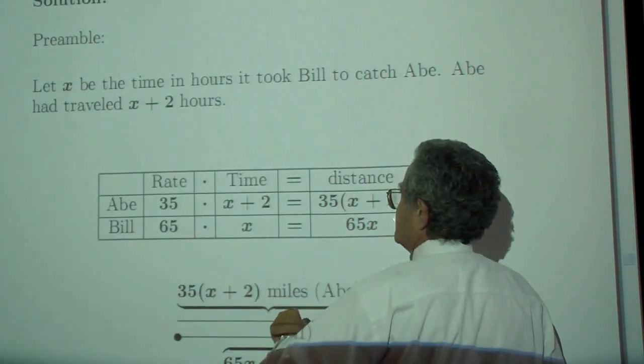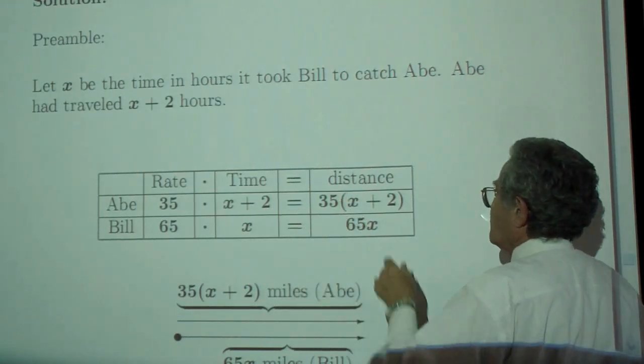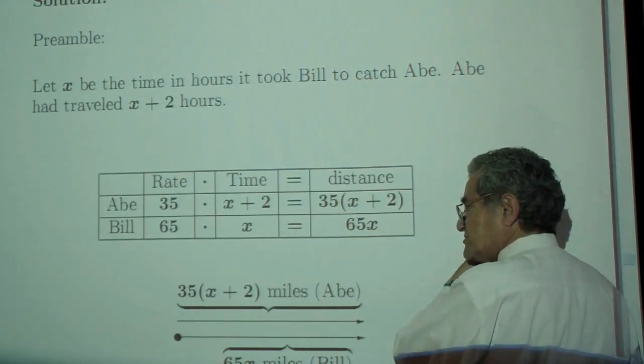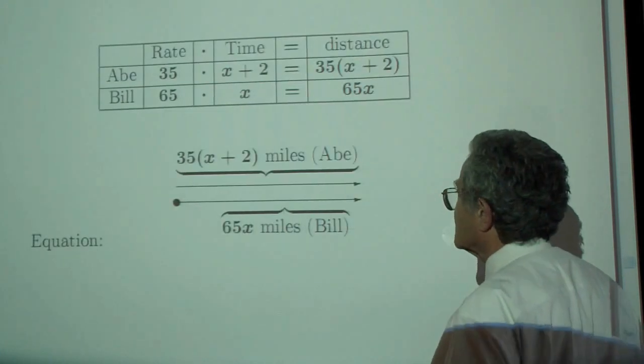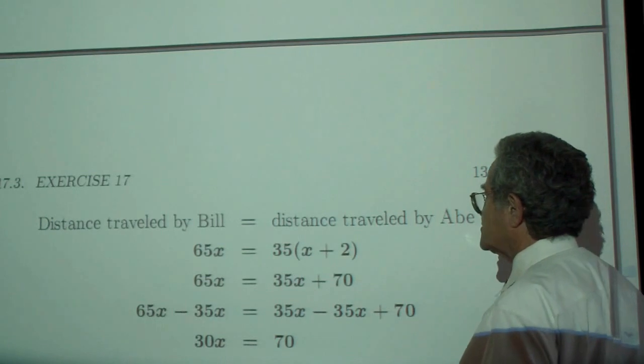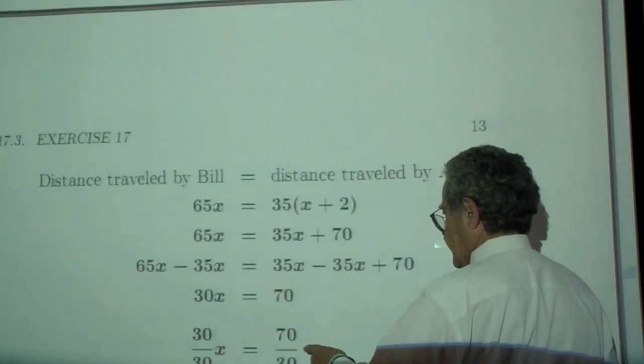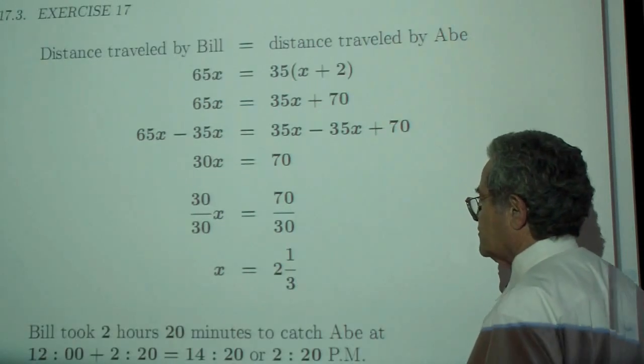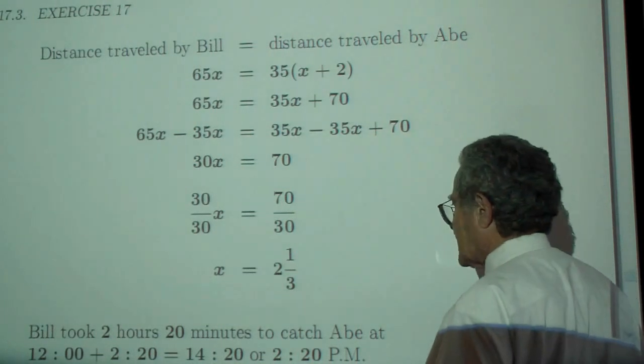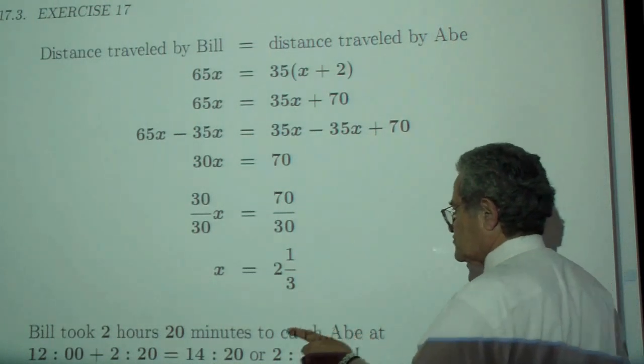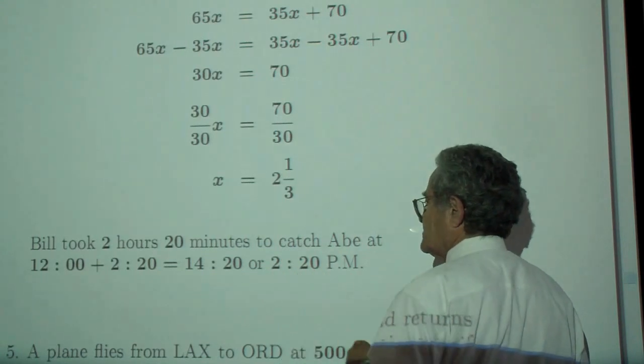Rates 35 and 65, time x plus 2 and x, multiply, you get the distances. One distance is equal to the other distance because the Bronco catches up with the moped. That's your equation. So distribute, subtract 35x, divide by 30. X is 2 and a third. Bill took 2 hours and 20 minutes to catch Abe. So 12 plus 2:20 is 2:20 PM.